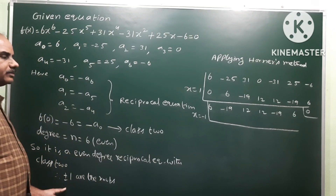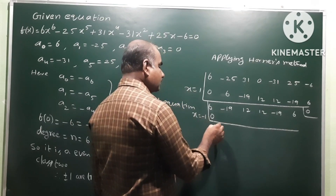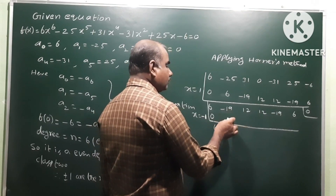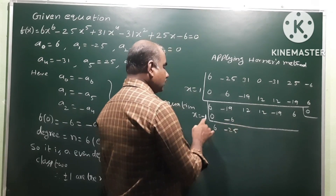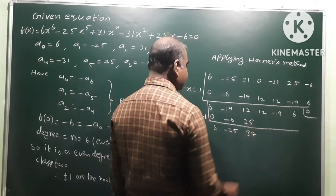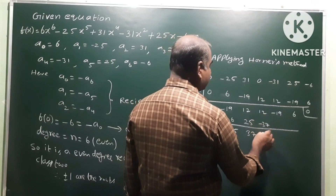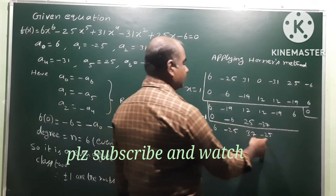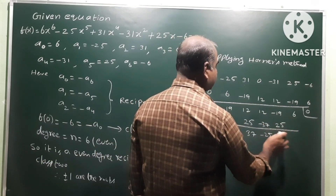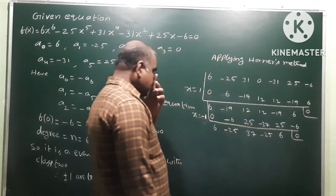Now apply synthetic division for x = -1 on the quotient. For x = -1: 6; (-1)×6 = -6; -19 - 6 = -25; (-1)×(-25) = +25; 12 + 25 = ... proceeding through the row: 25 - 19 = 6; (-1)×6 = -6; 6 - 6 = 0. Remainder is zero, so this is our quotient.